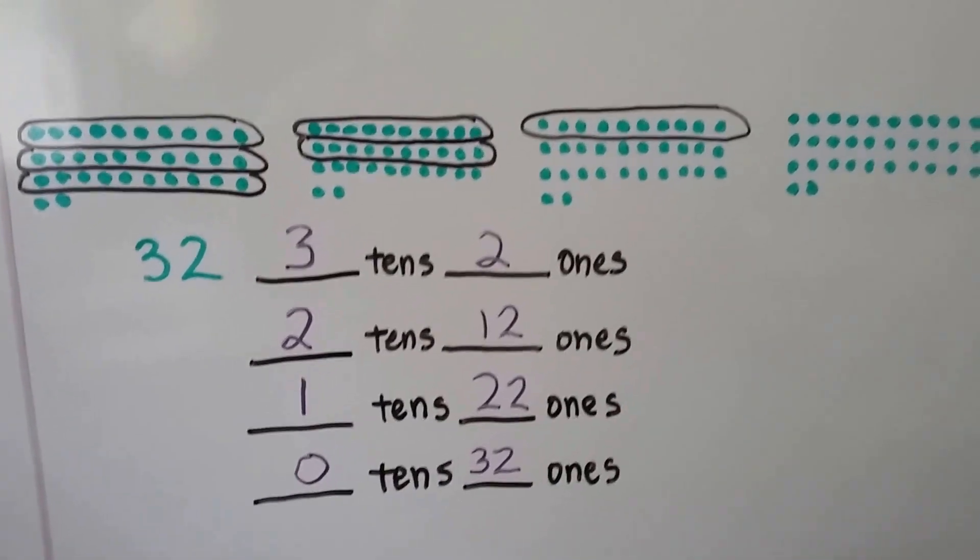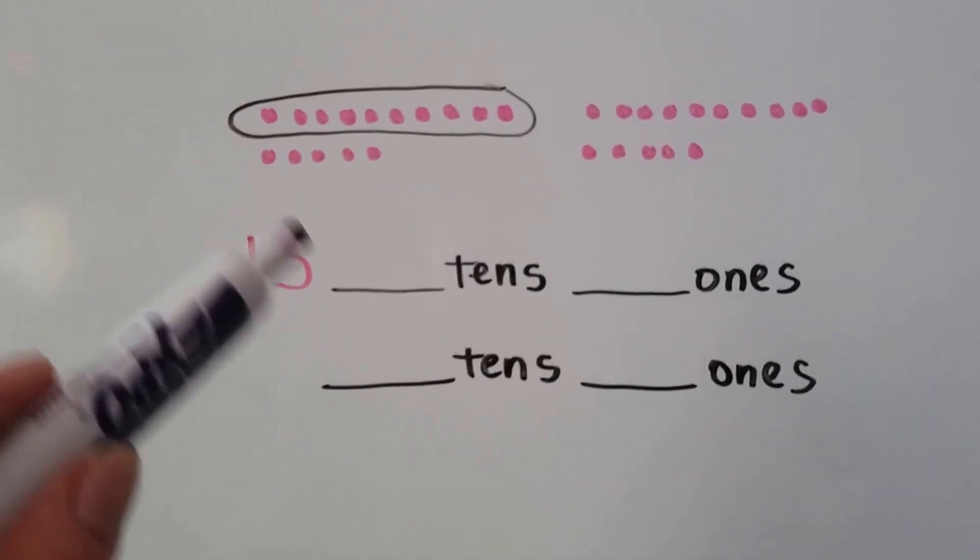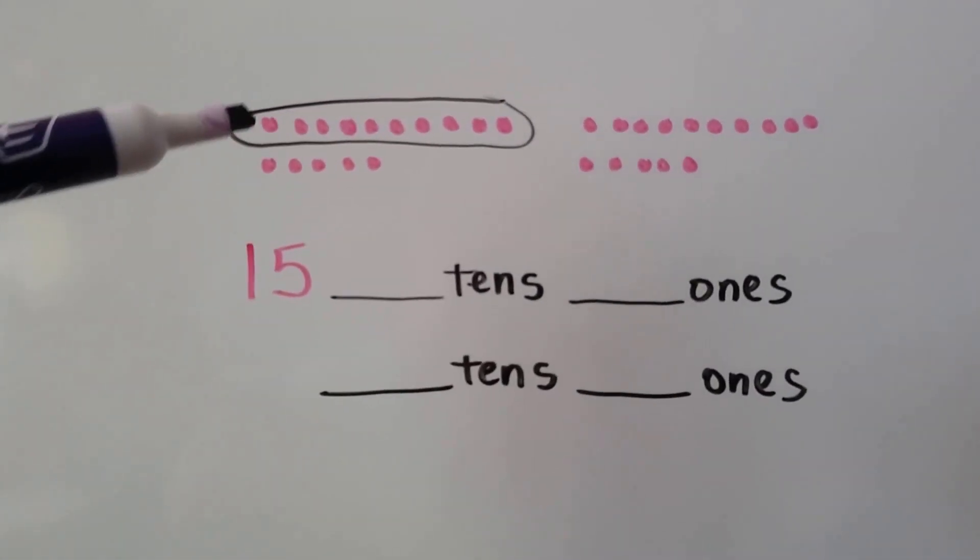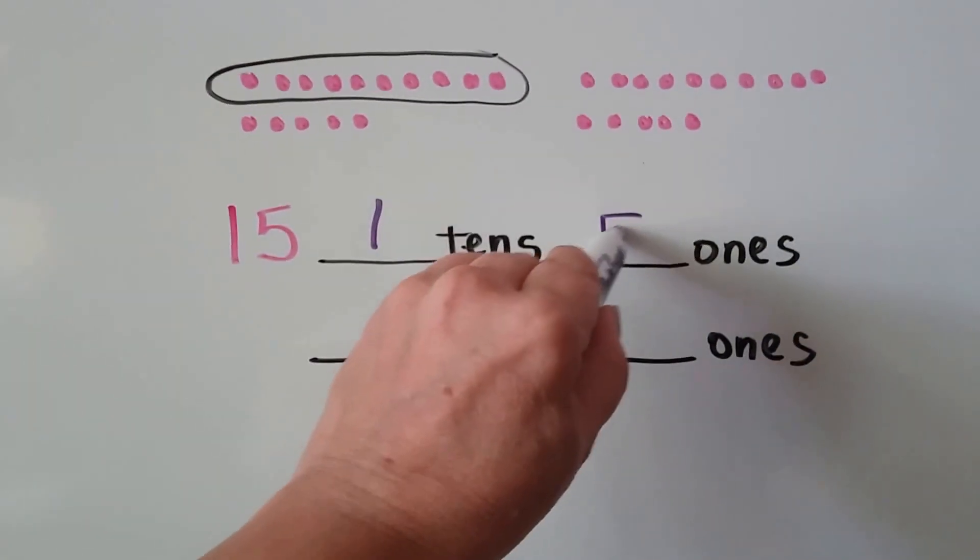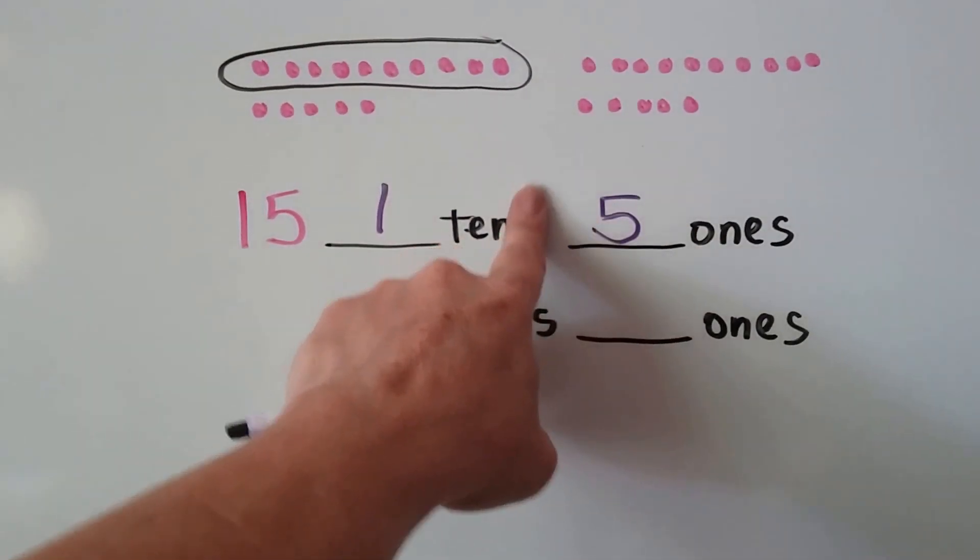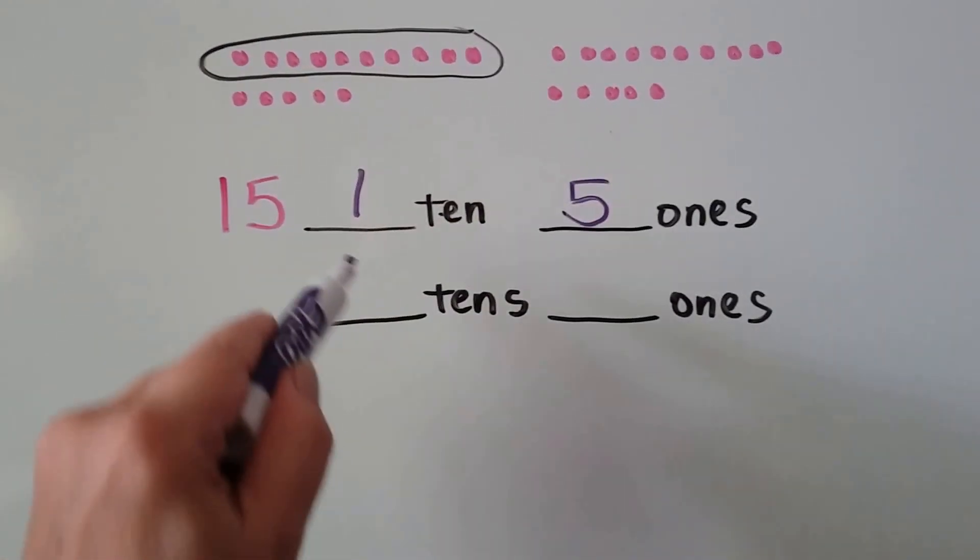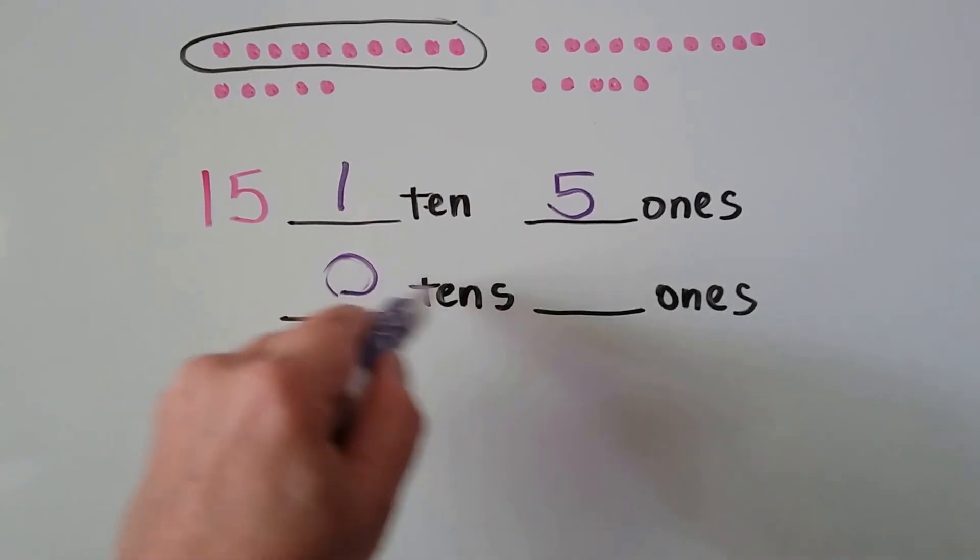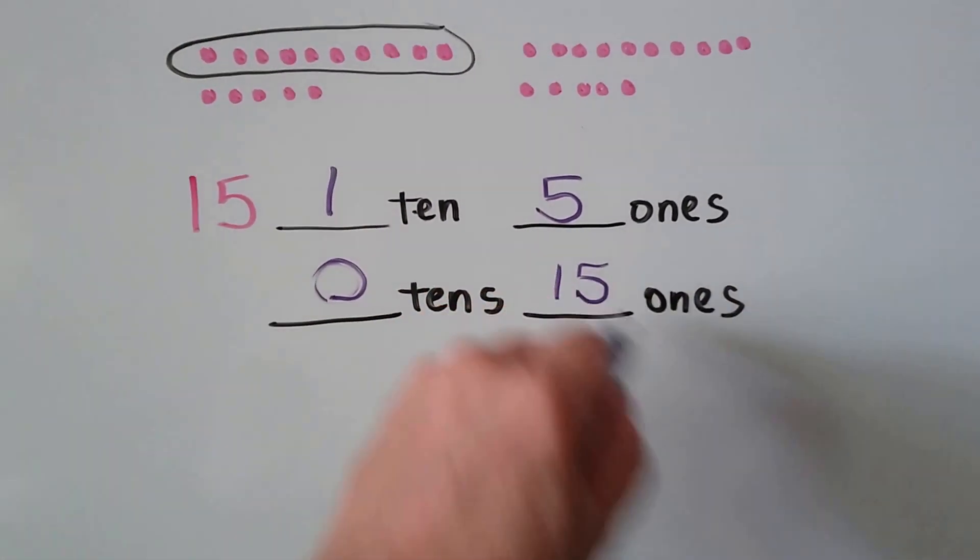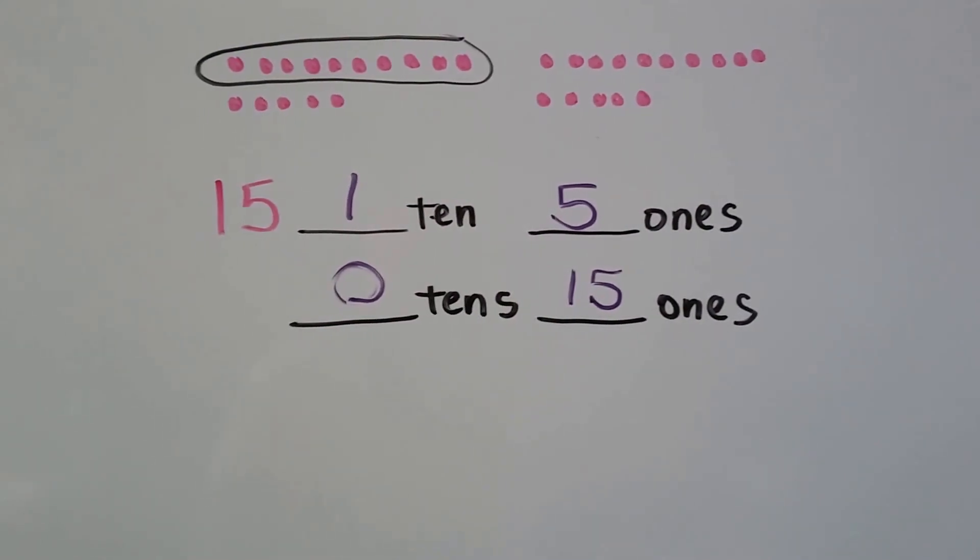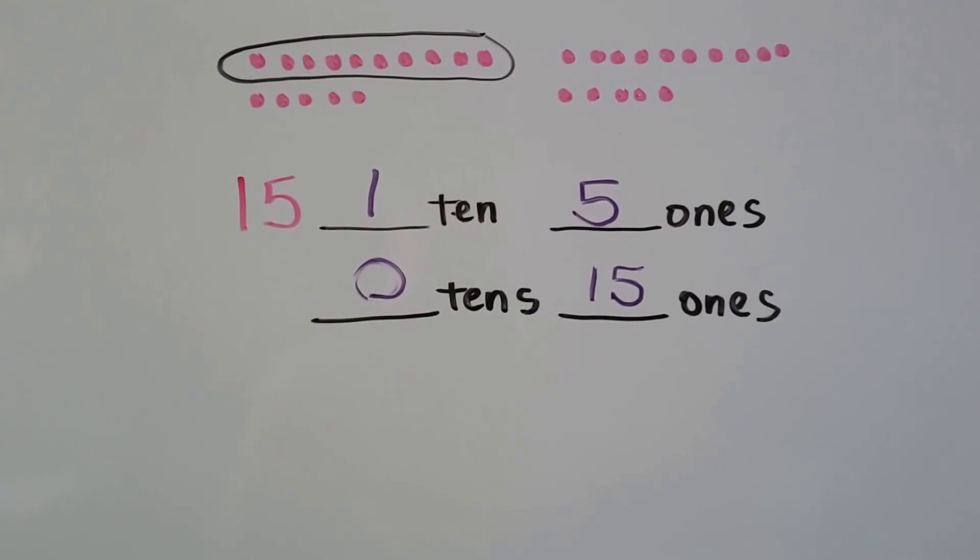Let's try that again. We have 15 right here. We can show it as one ten and 5 ones. So it would be one ten, wouldn't it? Or we could show it as no tens and 15 ones. That's regrouping. We're changing the grouping from tens to all ones.